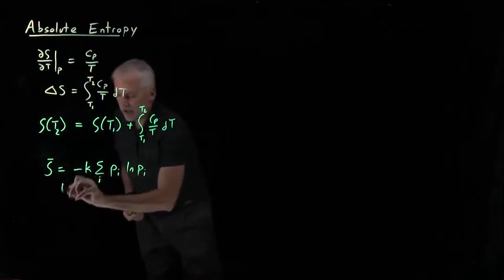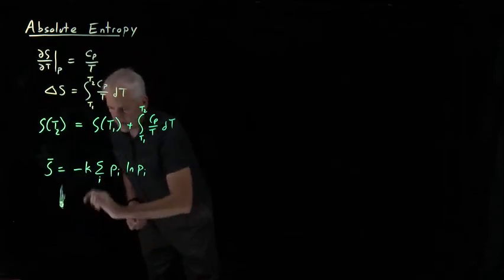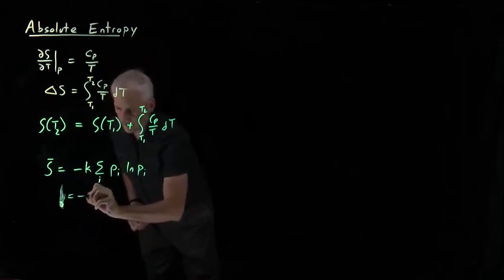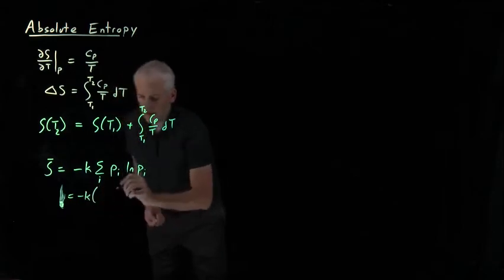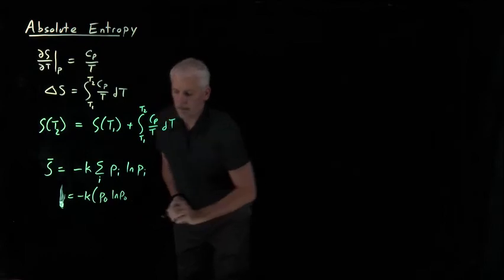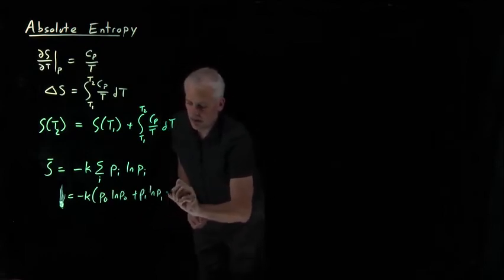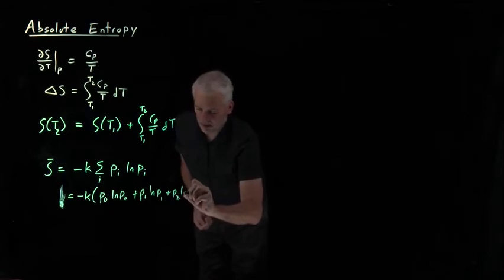If we imagine what that expression looks like, well, first let me just point out that that expression, that's minus K times probability in the ground state. If I let P0 be the name of the ground state, there are some excited states, P1 log P1, P2 plus times log P2,